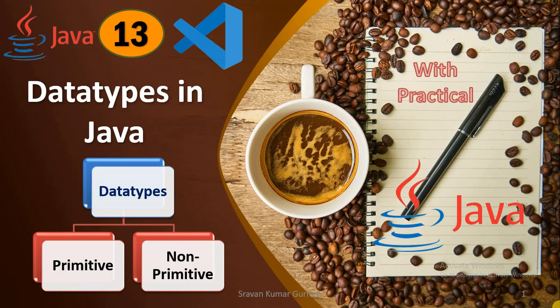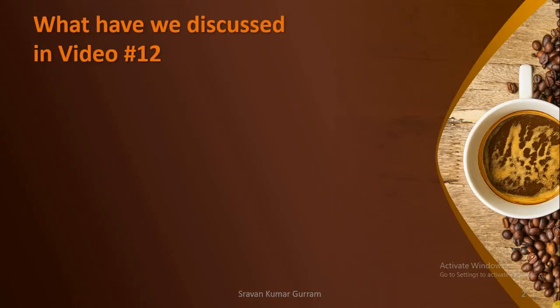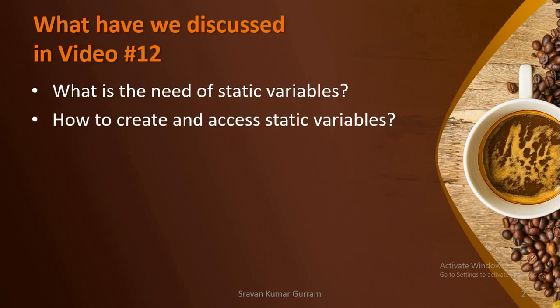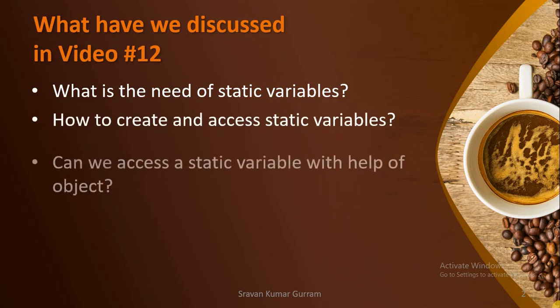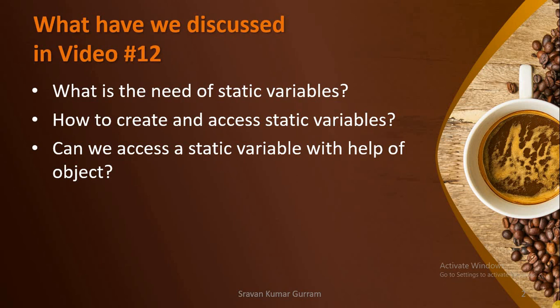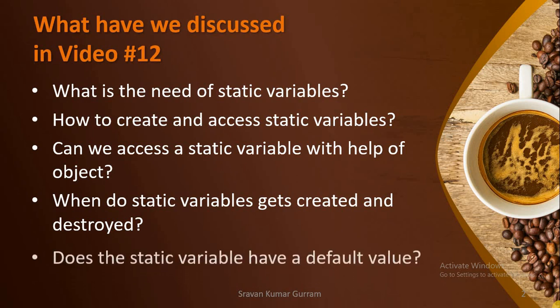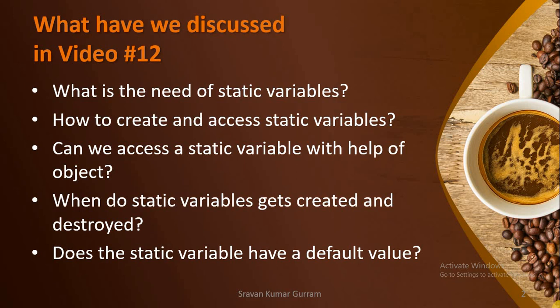Hi everyone. In this video we are going to discuss what is data type and what are the different categories of data types we have. Before starting today's session, let us recall what we discussed in our last video: the need of static variables, how to create and access them, whether we can access a static variable with an object, when they get created and destroyed, and whether they have a default value. All these were covered in detail in the last session. If you haven't watched that, please watch it — the link is given in the description box.